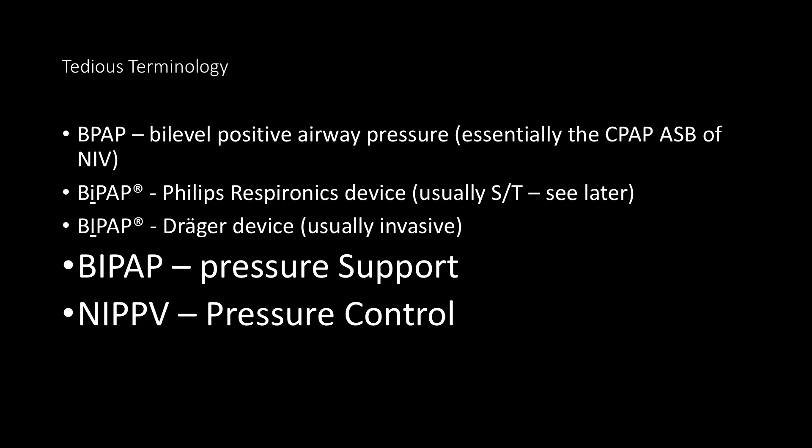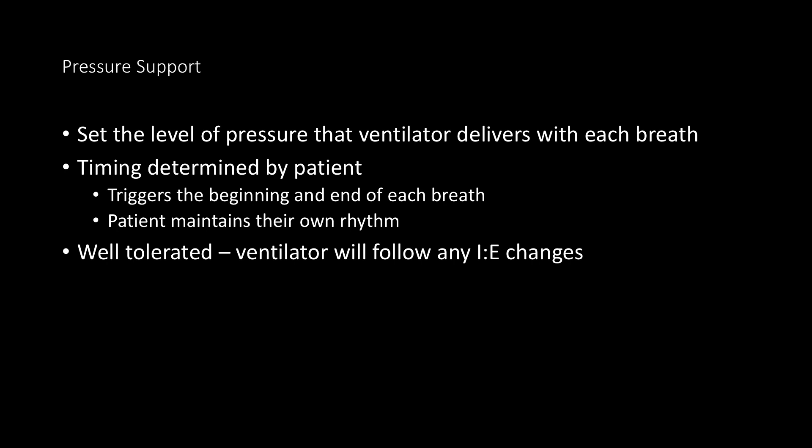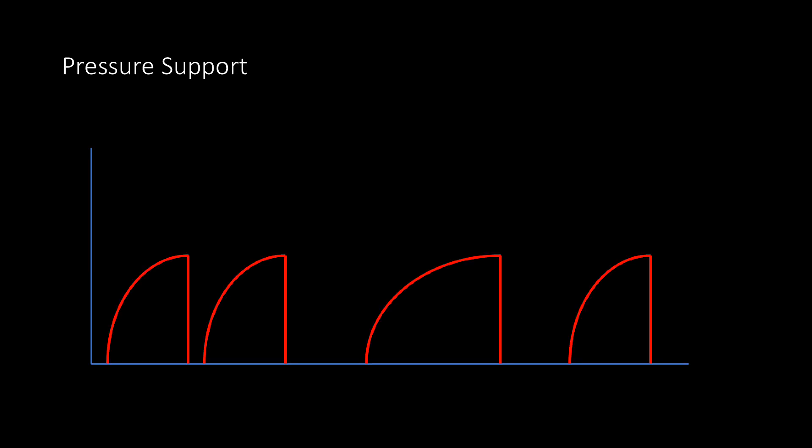In pressure support ventilation, we set the level of pressure that the ventilator delivers with each breath. The timing is completely determined by the patient — they trigger the beginning and end of each breath and maintain their own rhythm. It's well tolerated; the patient does what they like and the ventilator will follow any changes in the I:E ratio. This is a pictorial example of a patient receiving pressure support: the patient is choosing their own respiratory rate and their own I:E ratio.